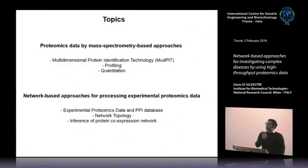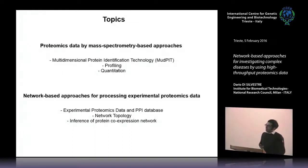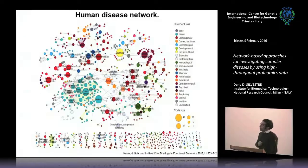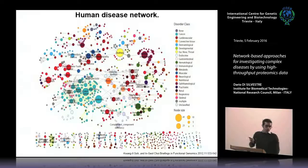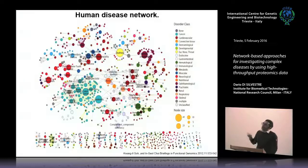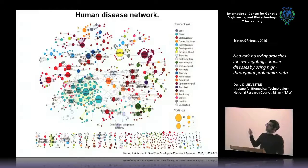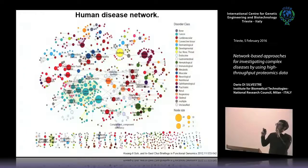In my presentation, I am going to talk about an approach that combines high-throughput proteomic data and network-based approaches for processing and interpreting this data. In particular, approaches based on protein-protein interaction network analysis. These approaches are applied in our lab to investigate complex diseases, which are usually multifactorial. This approach takes into consideration multiple ensembles of elements and may be useful for identifying multiple targets.